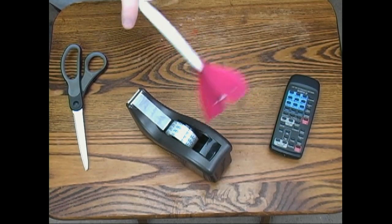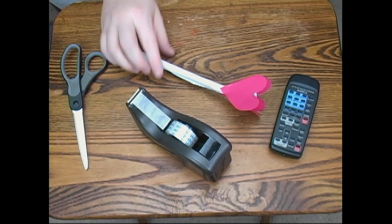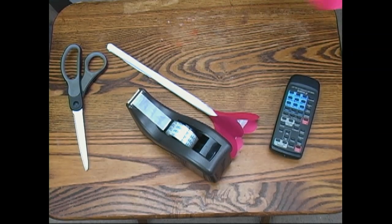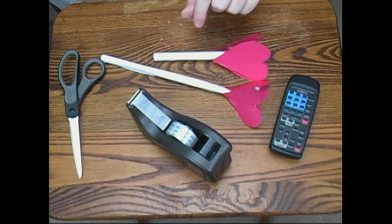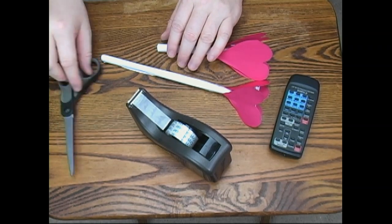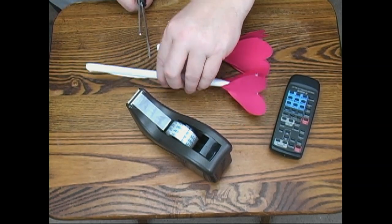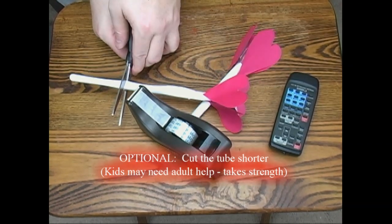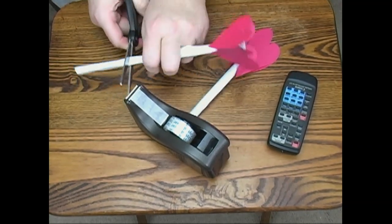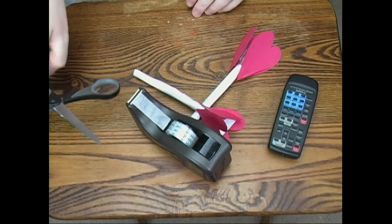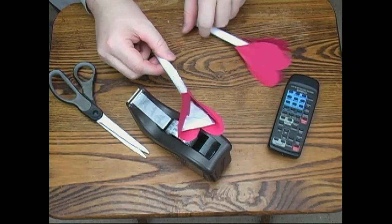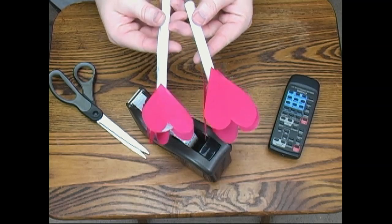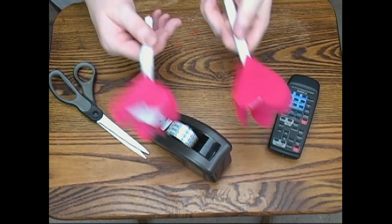There's our heart-shaped maraca. Now you notice that this one, the stick's a lot longer than the one I made before. So what you can do, I thought the stick seemed a little long, so I cut it off. You can take this and just push hard on the scissors. You might need an adult's help if you're a kid. And then you've cut your stick and now you have a short stick that makes more sense size-wise. So now I have two heart shakers.